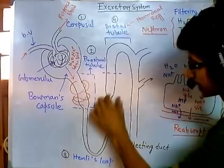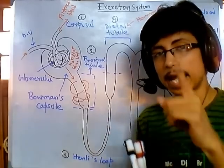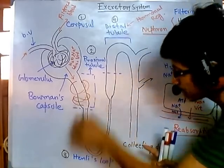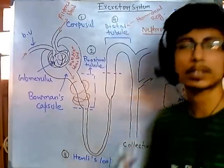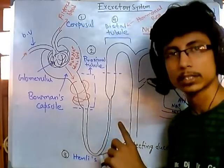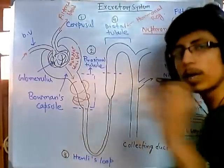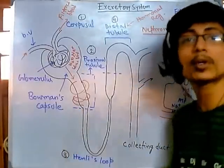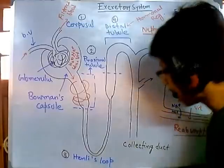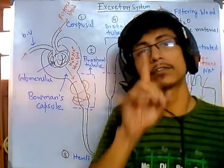The three sections are the descending loop, the U-shaped bottom region, and the ascending loop. These are placed perfectly in a U-orientation, and that U-shape is the key to creating the concentration gradient. If it were a straight pipe, it would never be possible for Henley's loop to make a concentration gradient. The descending cells are more permeable to water and very less permeable to electrolytes like sodium, potassium, and chlorine.